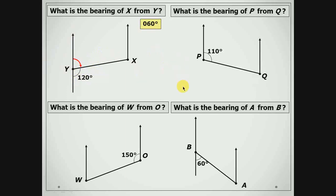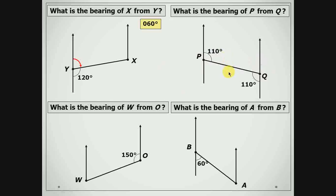Next one: what is the bearing of P from Q? We are leaving from Q. If we extend our north lines, we should notice that these two angles are alternate angles, so they are equal to 110. Then we have our angle on a straight line, which is 180. So 180 plus 110 gives us 290 degrees.